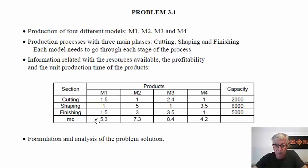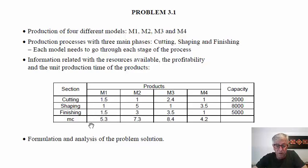We also have information about the time required to produce each unit of each model. For example, for the first model we need a total of four hours: one hour and a half in cutting, one hour in shaping and one hour in finishing. In terms of profitability, we have the unit contribution margin — for example, product one provides 5.3 euros per unit. The highest contribution margin corresponds to product three, which provides 8.4 euros per unit.